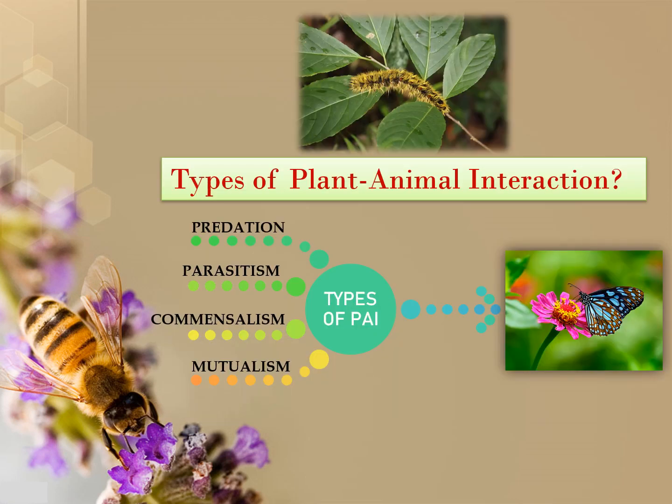The types of plant-animal interaction are: predation, parasitism, commensalism, and mutualism.